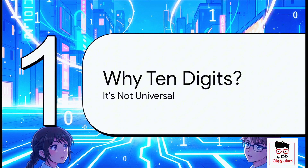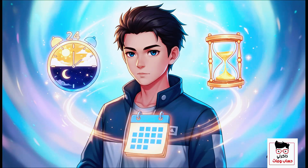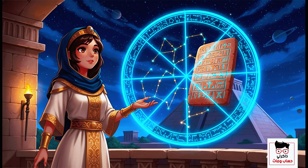We navigate a world full of totally different number systems every single day, and we do it without even blinking. Think about it — there are 24 hours in a day, not 10. There are 60 seconds in a minute, 7 days in a week. These are ancient ways of counting that made perfect sense for tracking time and cycles, and they're still completely baked into our lives today. The number system we use is just a choice, a human invention, not some universal law of nature.